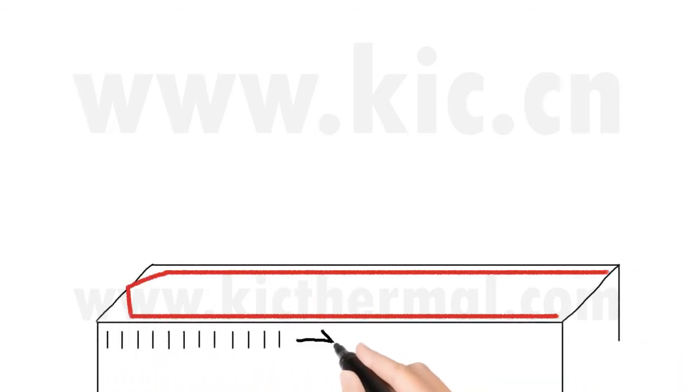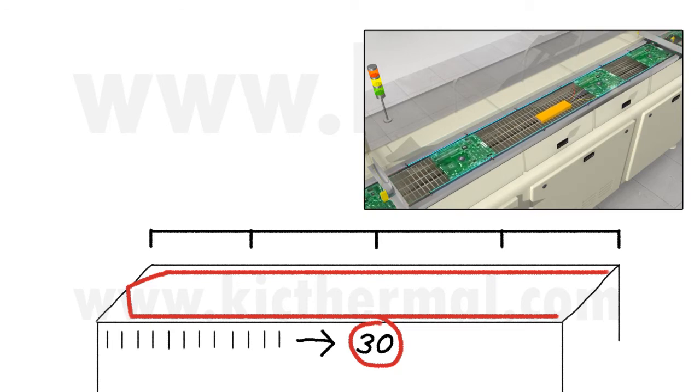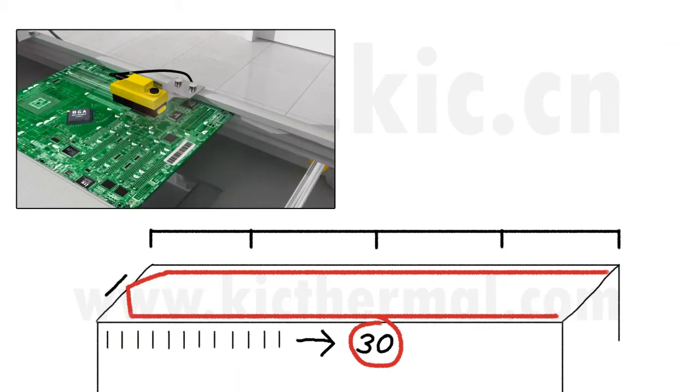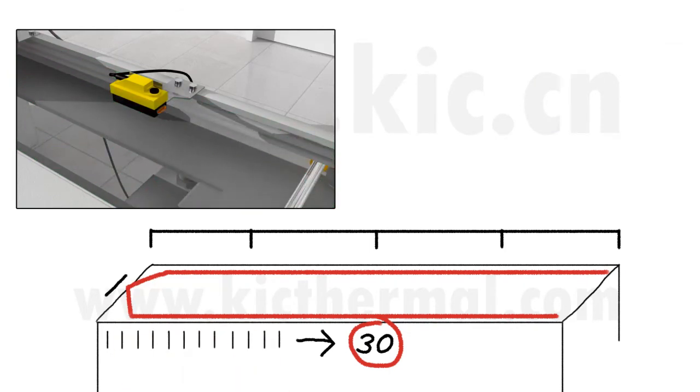This is done by installing 30 temperature sensors along the track where the PCBs are transported during production. There is also a board sensor at the front of the oven so we know at all times where the PCB is inside the oven.